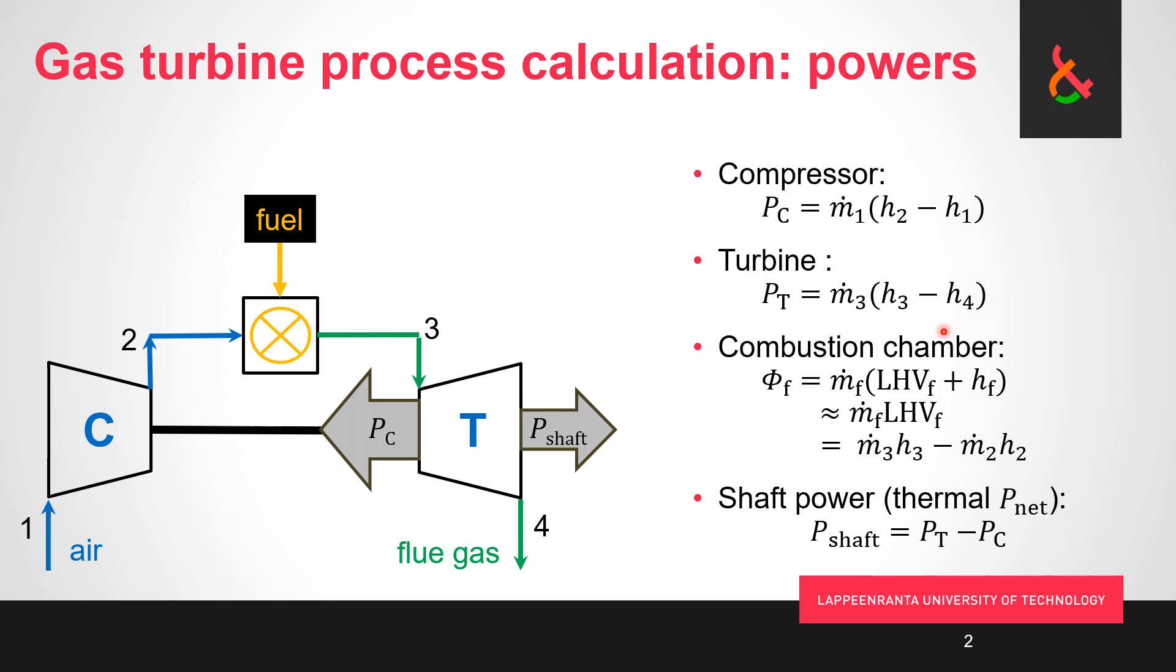So mass flow rate times enthalpy difference gives us the turbine thermal power. Combustion chamber is only a tiny bit more complicated. Basically the heat rate into the combustion chamber is mass flow rate of fuel times all kinds of energy that the fuel brings with it.